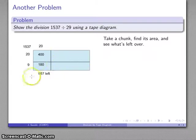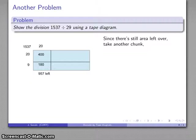So after I've taken out this portion here, the rest of the rectangle has area 957. Now let's take another chunk of the rectangle. So again, this time I might notice that this area here, 400, 580, I can definitely take out another piece of size 580.